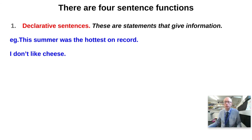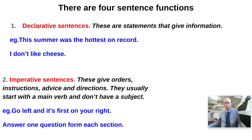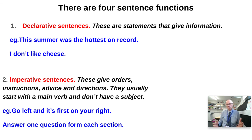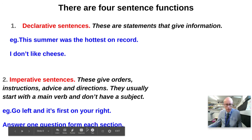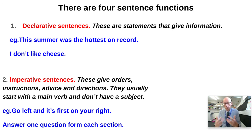We also have imperative sentences. These give orders, instructions, advice, or directions. They often start with the main verb and don't have a subject — things like 'Go left and it's first on your right' or 'Answer one question from each section'. What's interesting in imperative sentences is the notion of power. If you're able to use imperatives to someone, there may well be hierarchical power at play — influential power or instrumental power over the person you're speaking to.